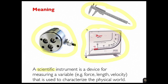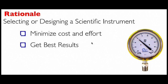So a scientific instrument is a device for measuring a variable, like force, length, pressure, velocity, torque, that is used to characterize the physical world. The reasons for learning about scientific instruments are so we can minimize cost and effort, and so we can get better results.